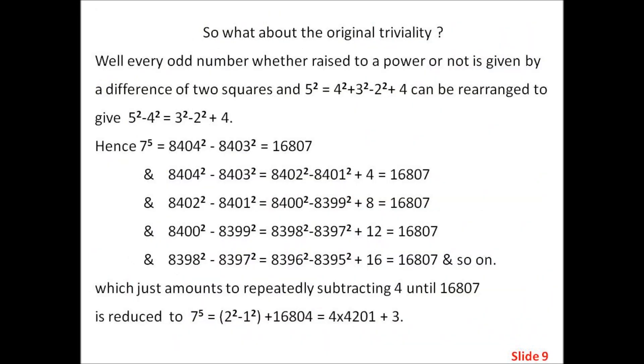So what's about the original triviality? Well, every odd number, whether raised to a power or not, is given by a difference of two squares. And 5 squared equals 4 squared plus 3 squared minus 2 squared plus 4 can be rearranged to give 5 squared minus 4 squared equals 3 squared minus 2 squared plus 4. Hence, 7 to the power of 5 equals 8404 squared minus 8403 squared equals 16807.